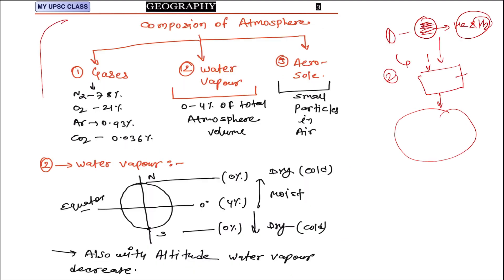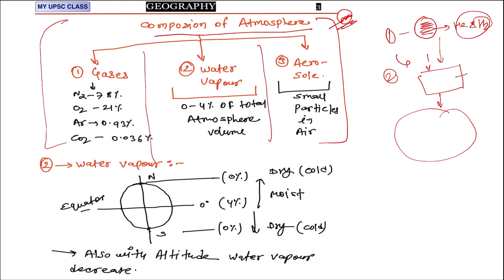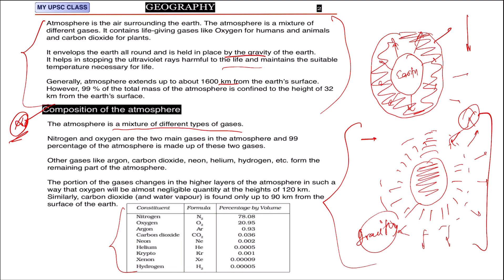Now, what is the composition of the atmosphere? This is a very static and important diagram for your exam — remember it well. The composition consists of three parts: gases, water vapor, and aerosols. Among the gases, the most important are nitrogen, oxygen, argon, carbon dioxide, and neon. Nitrogen is the maximum. We don't directly use nitrogen, but through the nitrogen cycle we get the small amount needed. Oxygen is used by all human beings, and carbon dioxide is very important for plants.